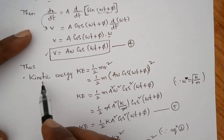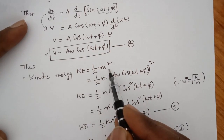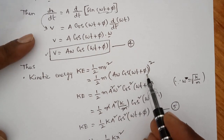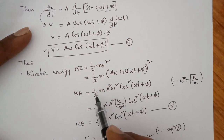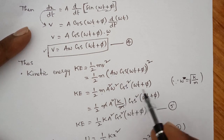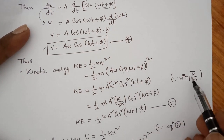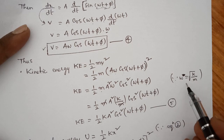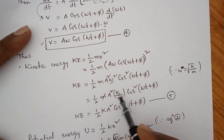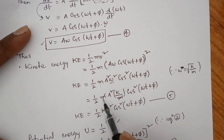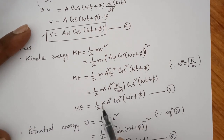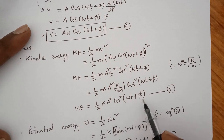Consider kinetic energy K equals half mv squared. Substituting v equals A omega cos of omega t plus phi, we get v squared equals A squared omega squared cos squared of omega t plus phi. So K equals half m A squared omega squared cos squared of omega t plus phi. Since omega squared equals k/m, and m cancels, K equals half k A squared cos squared of omega t plus phi. This is equation 5.